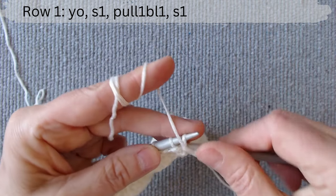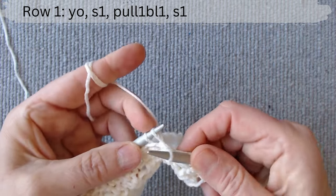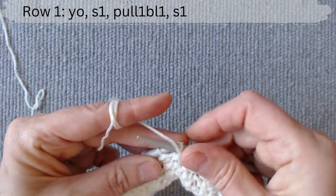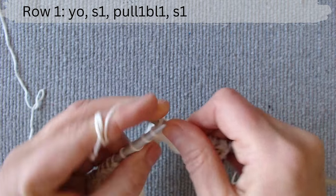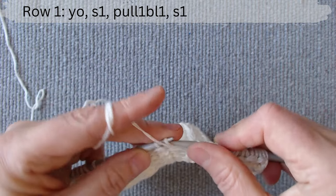Again, slip one loop with a yarn over, pull up a loop row below, and slip one loop. Knit in this manner until the row is complete.